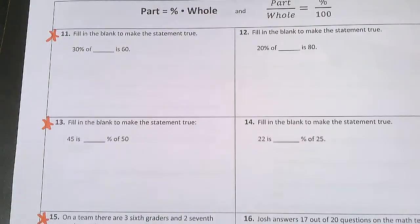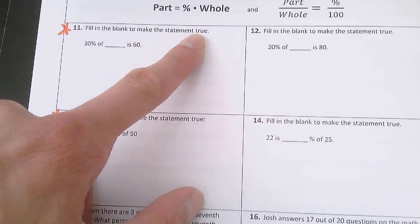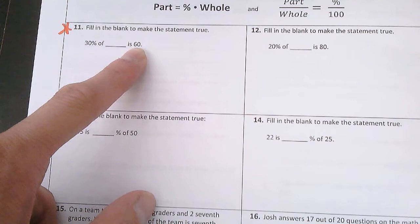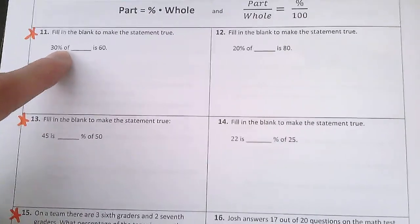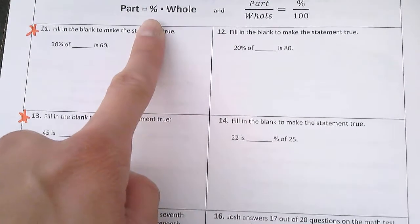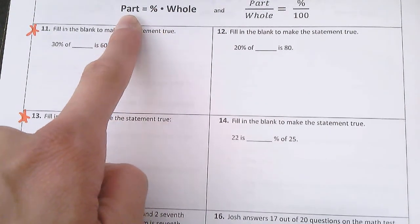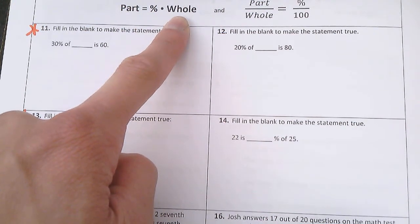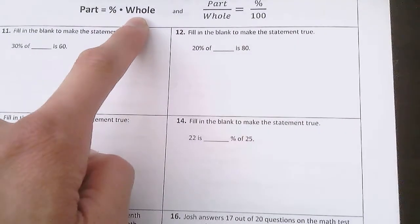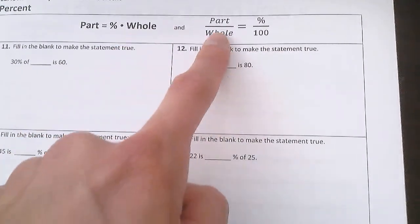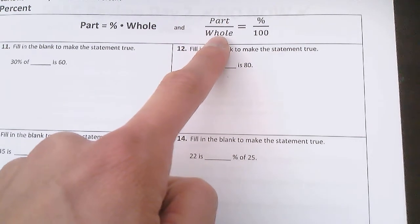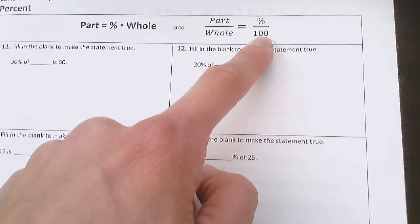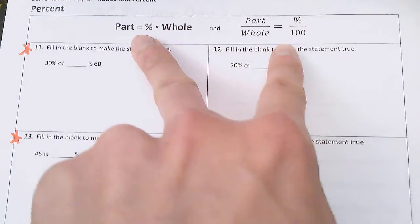Starting with problem number 11, it says to fill in the blank to make the statement true: 30% of some number is 60. To solve these problems I can use either of two equations. The first is that the part equals the percentage times the whole. Or, from earlier in the school year, the part divided by the whole is equal to the percent divided by 100. I'll show you both ways.